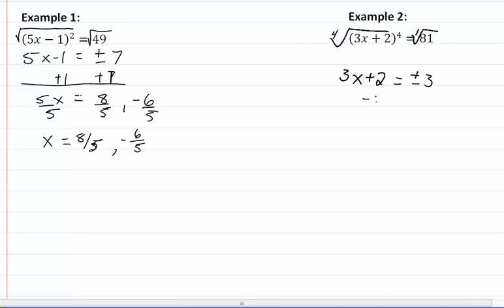We will subtract 2. So we will get 3x equal to a positive 3 minus 2 would give us 1. A negative 3 minus 2 would give us a negative 5. Divide both of those by 3. And so we get x is equal to 1 third and a negative 5 thirds.